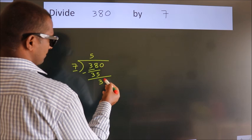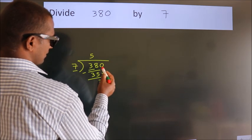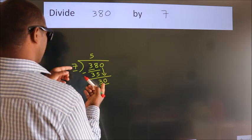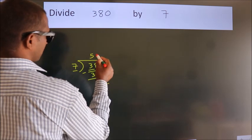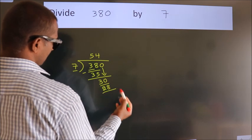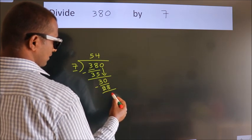After this, bring down the beside number. So 0 down. So 30. A number close to 30 in the 7 table is 7 fours, 28. Now we subtract. We get 2.